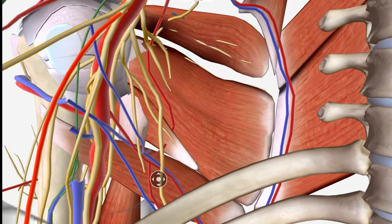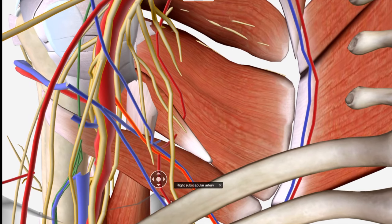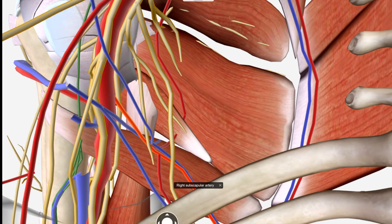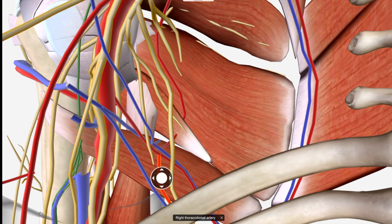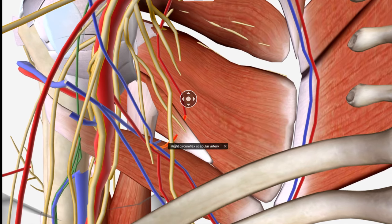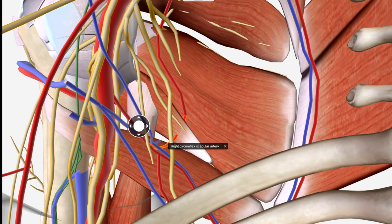Now S for subscapular artery. The subscapular artery splits into two branches: one is the thoracodorsal artery, which goes to the latissimus dorsi, and the other is the circumflex scapular artery, which wraps around to supply the scapula region. In most prosections, these two branches come off a bifurcation of the subscapular artery. So: subscapular artery splits into circumflex scapular and thoracodorsal arteries. Always name arteries based on where they're going, not where they're coming from.